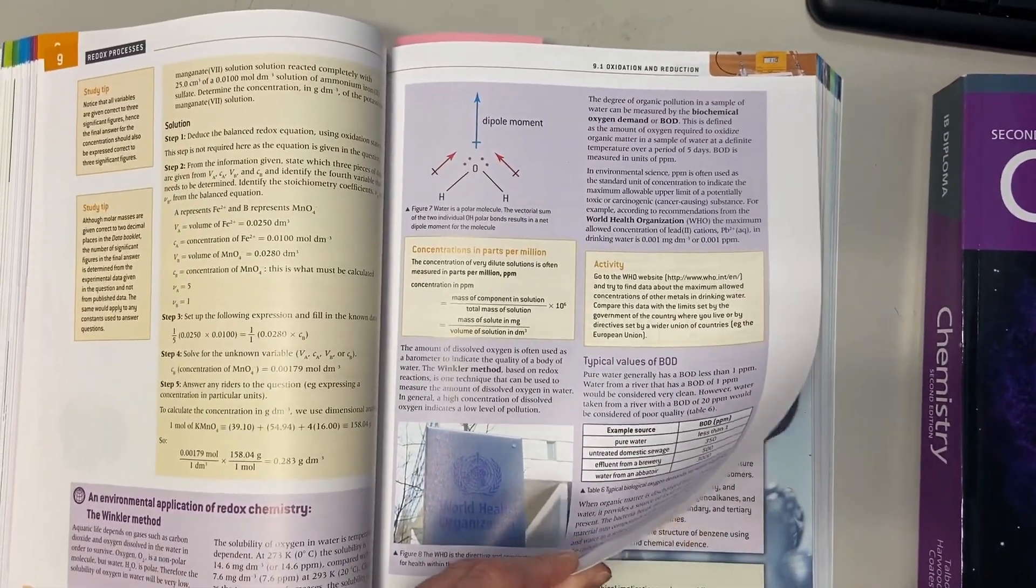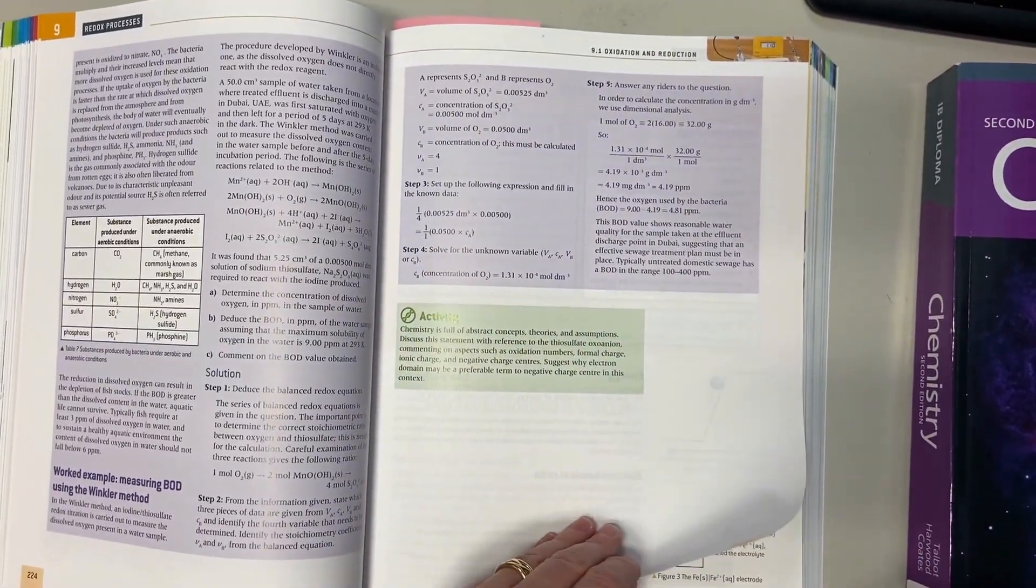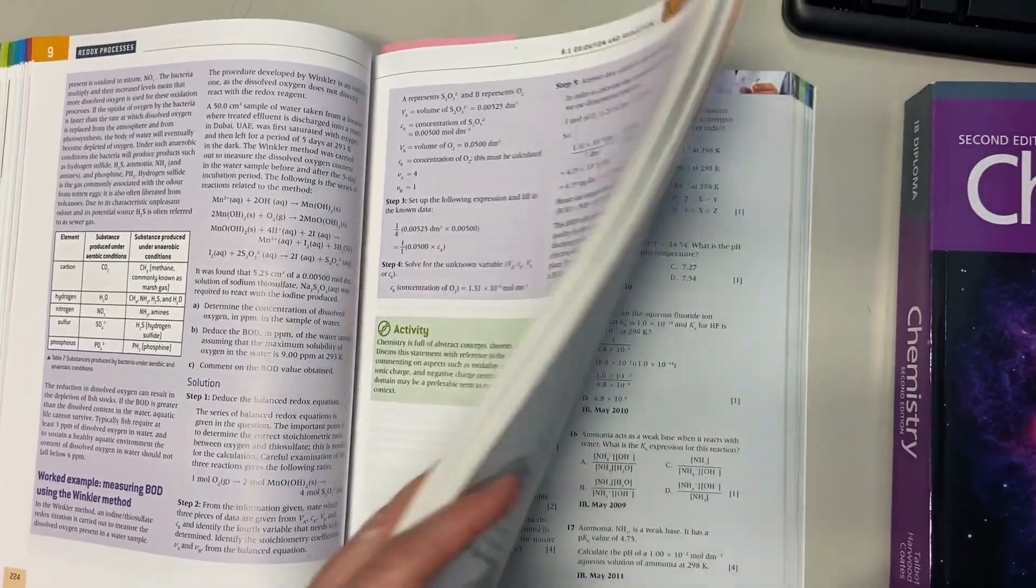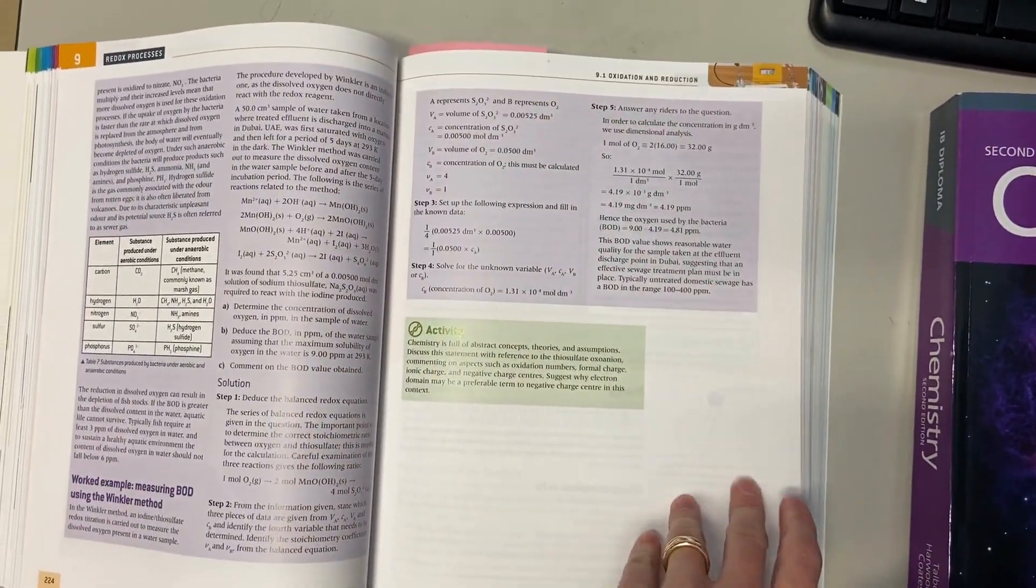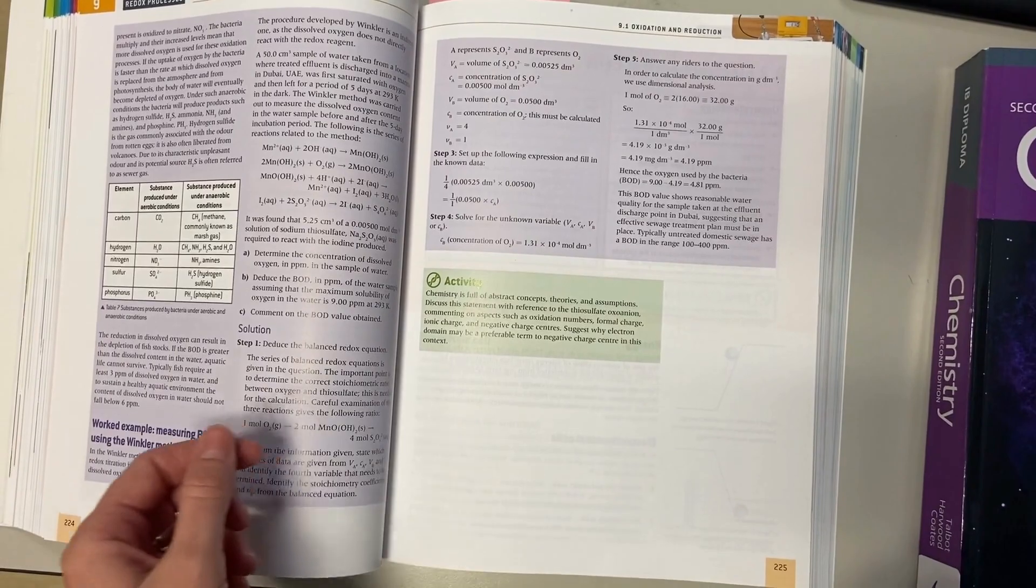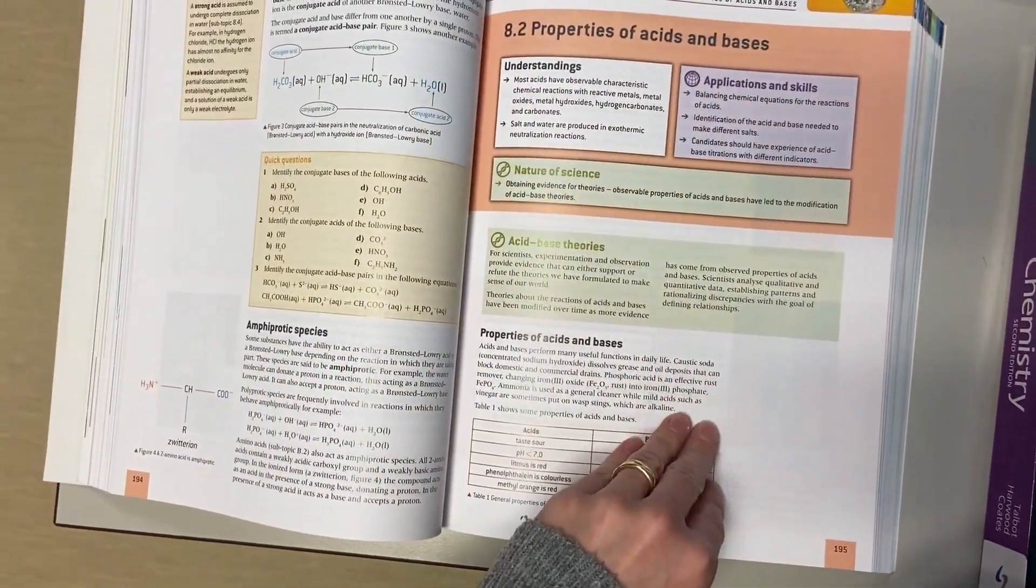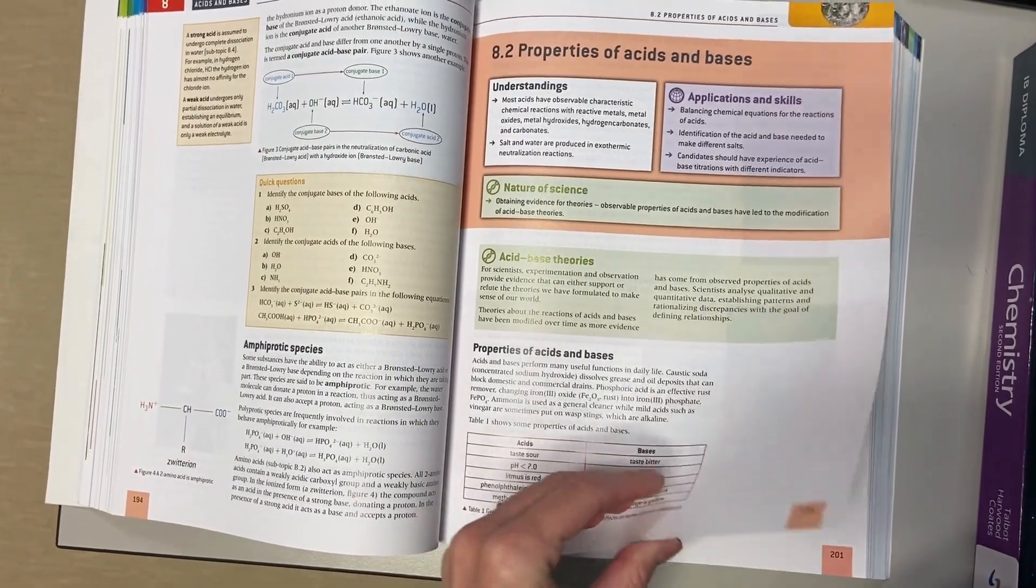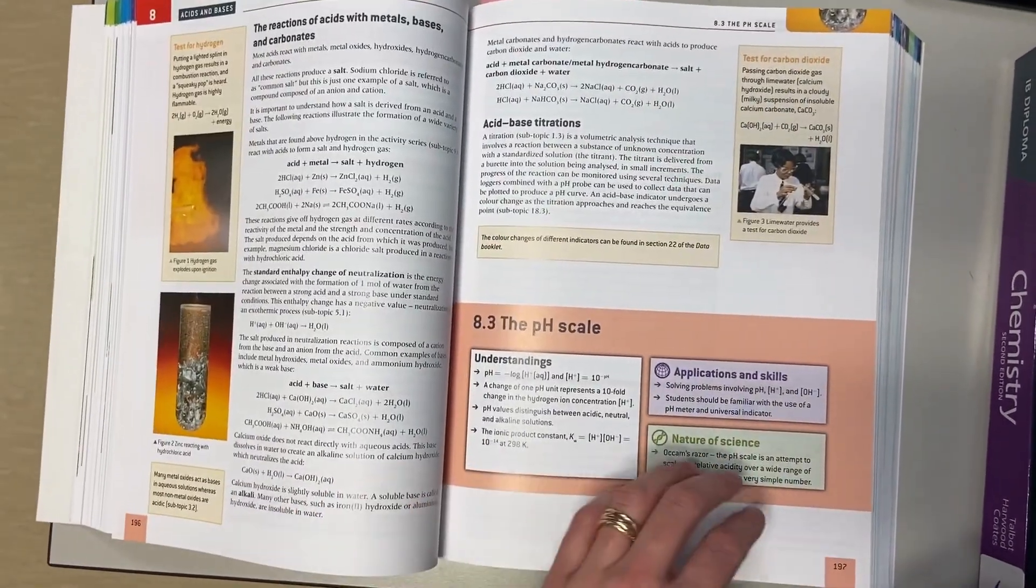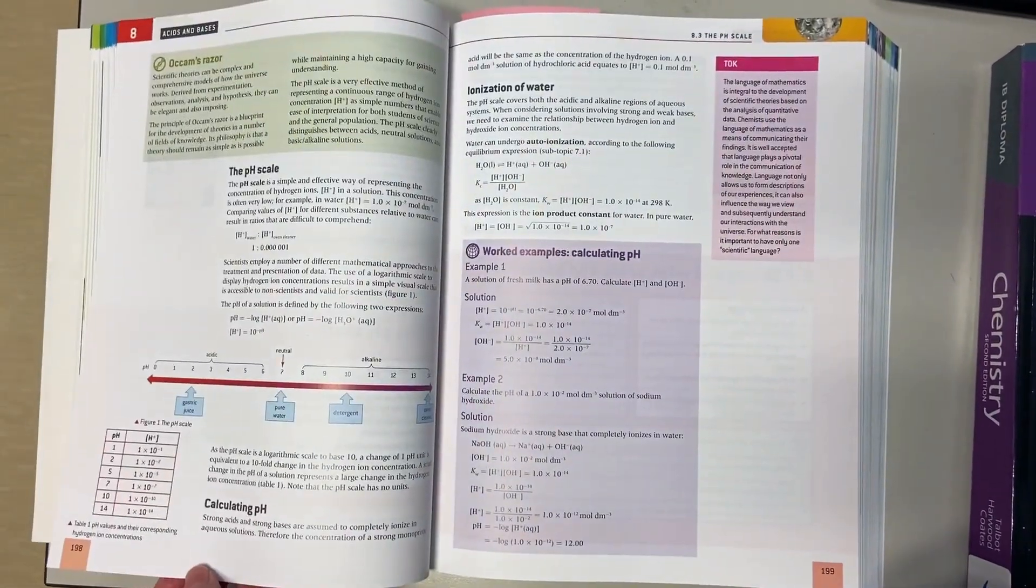You have to skip all the way to the back of the book to find chapter 19, which is the extra content for the HL chapter. I will say there are some good pictures here, but I don't like that there are not a ton of practice questions after every section. There are some, but there's not a large amount.